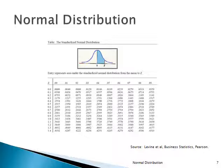For example, for a Z value of 0.50: you go to the 0.5 row and over to the 0.00 column, and the table value is 0.1915. That means the area under the Z curve between the mean of 0 and a Z value of 0.50 is 0.1915 — in other words, 19.15% of the distribution is between 0 and 0.5.